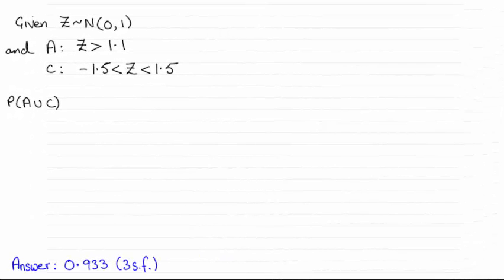Hi. Now for this question, we're asked to work out the probability of A union C, where A and C are these two events given up here. And it turns out the answer is 0.933 to three significant figures.